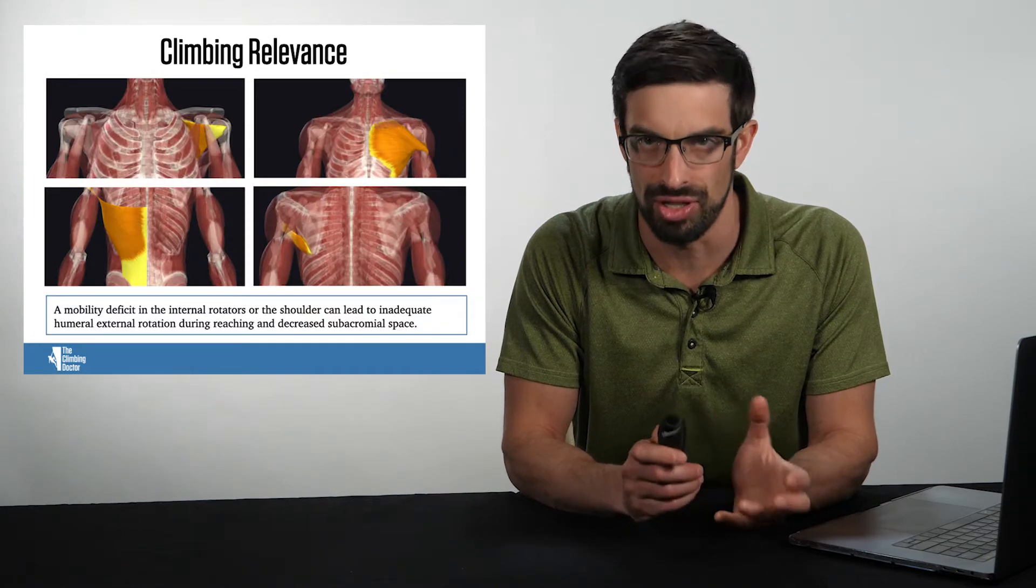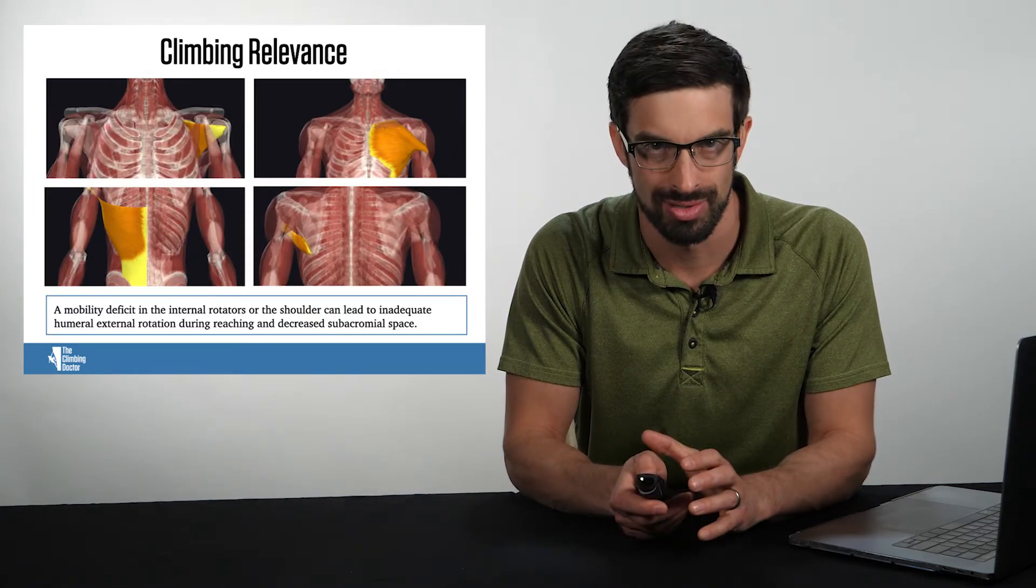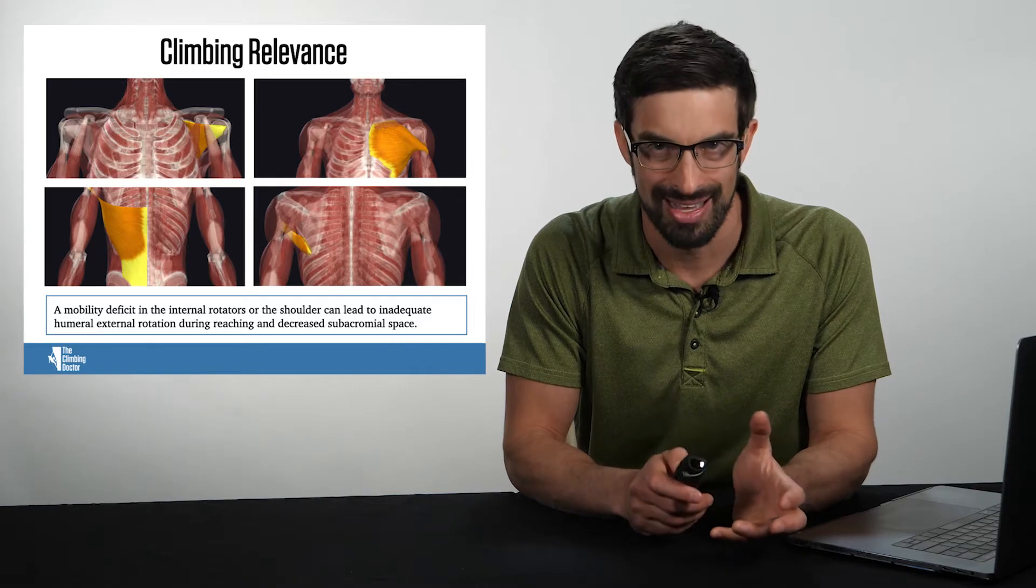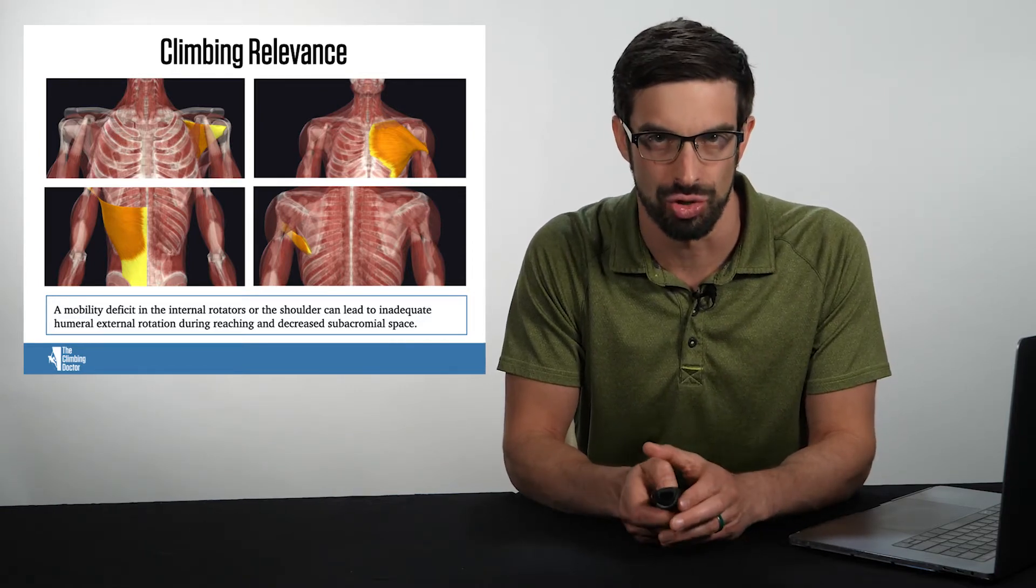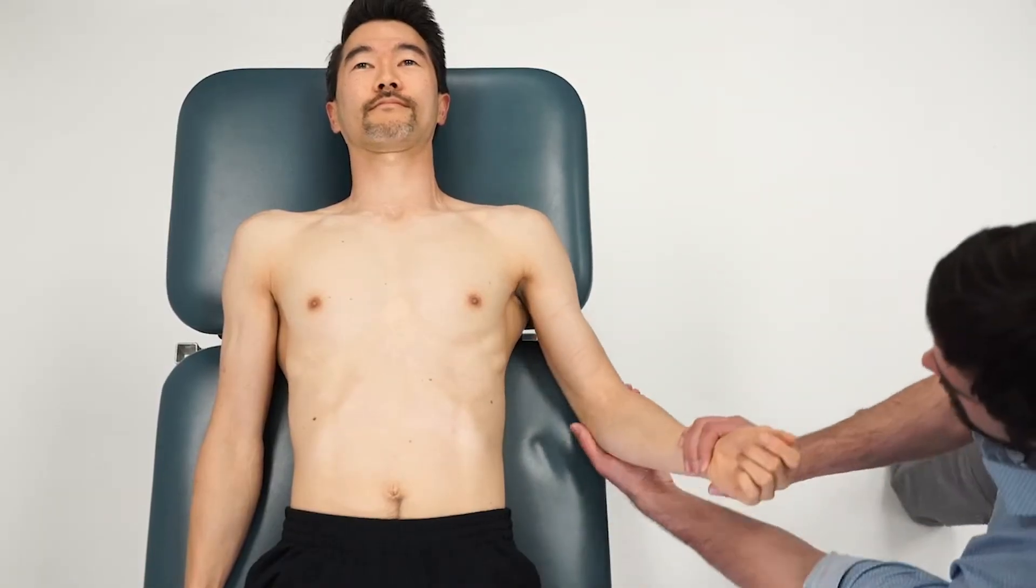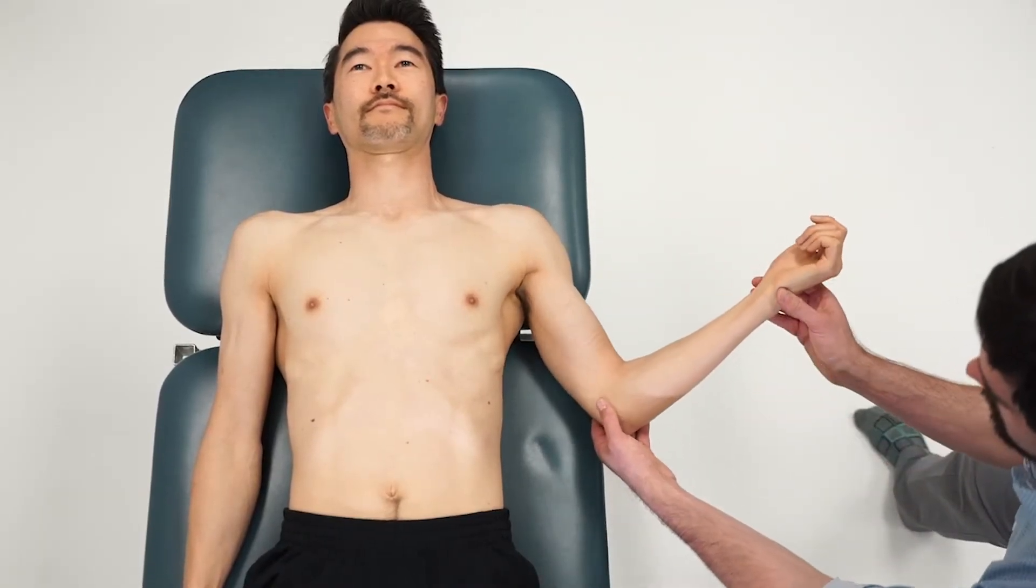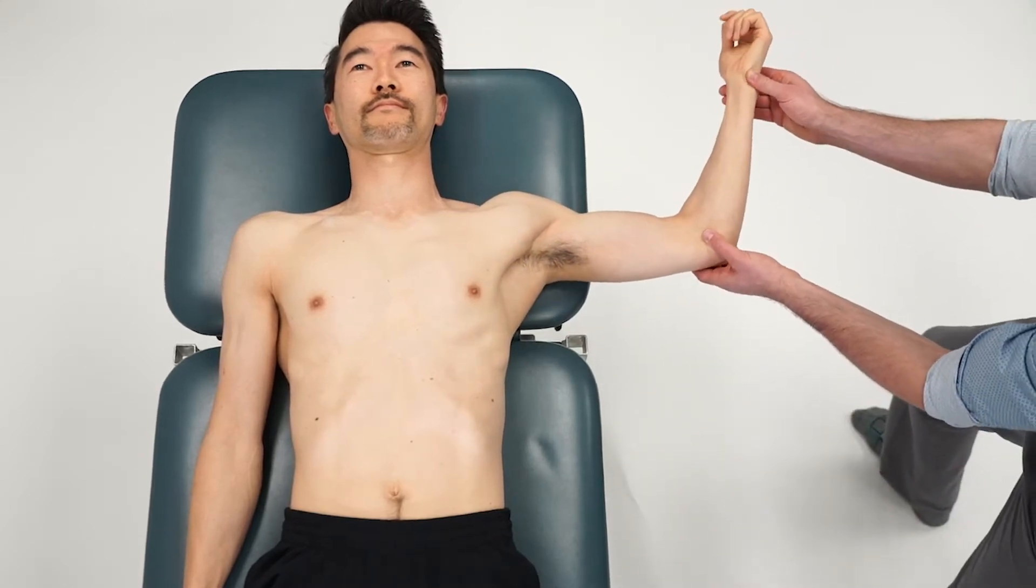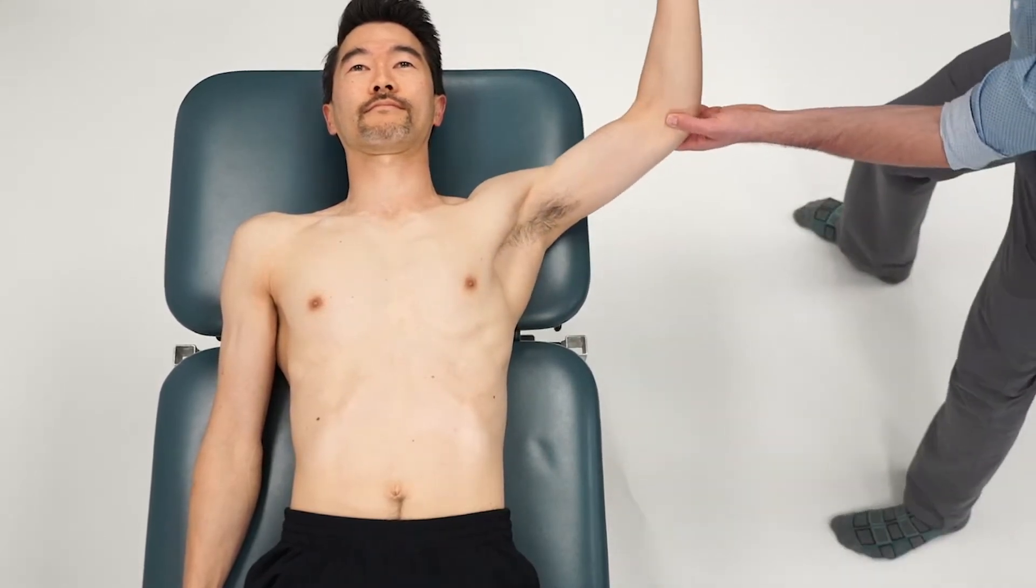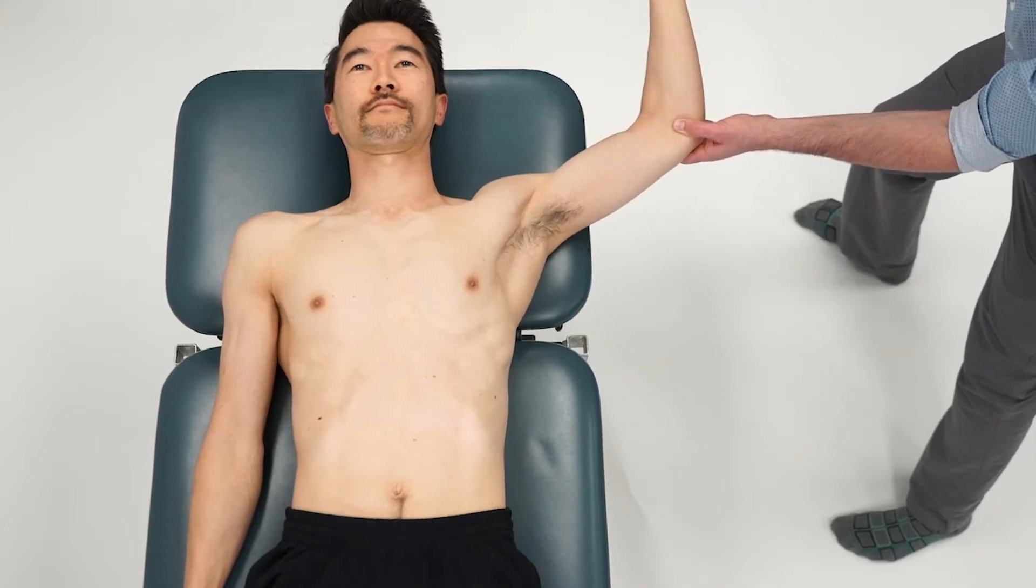We have the subscapularis muscle, the pectoralis muscle, latissimus dorsi as well as teres major - these are the internal rotators of the shoulder. When we're testing at 45 degrees, we're biasing subscapularis. At 90 degrees, pectoralis major clavicular fibers as well as joint capsule. At 135 degrees, pectoralis major sternal fibers.